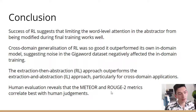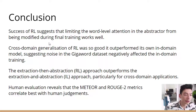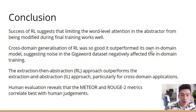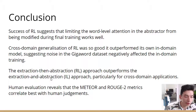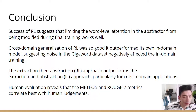In conclusion, the success of RL suggests that limiting the word-level attention in the abstractor from being modified during final training works quite well. It's found that the cross-domain generalization of RL was so good it outperformed its own in-domain model, suggesting that noise in the GigaWord dataset negatively affected the in-domain training. Going back to my final thoughts: extraction-then-abstraction outperforms extraction-and-abstraction, particularly for cross-domain applications, and Meteor and Rouge-2 correlate the best with human judgments. Thank you for listening.